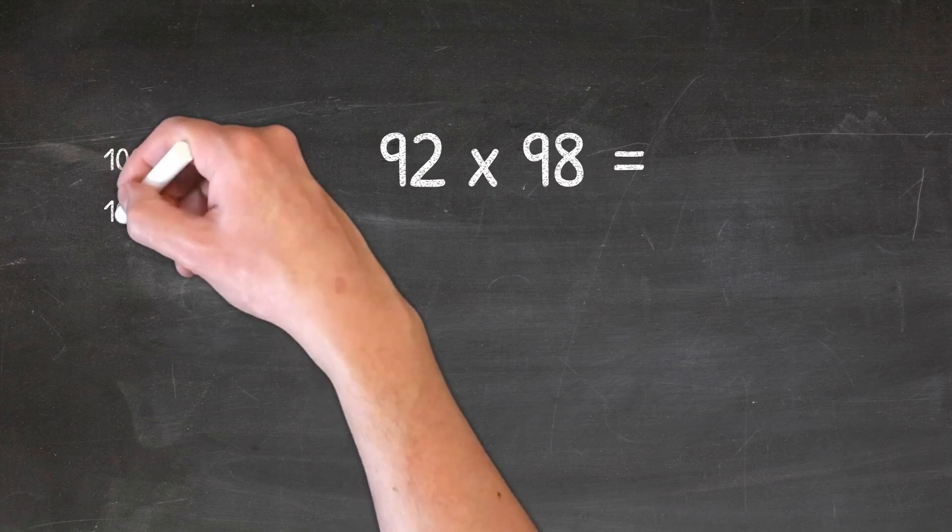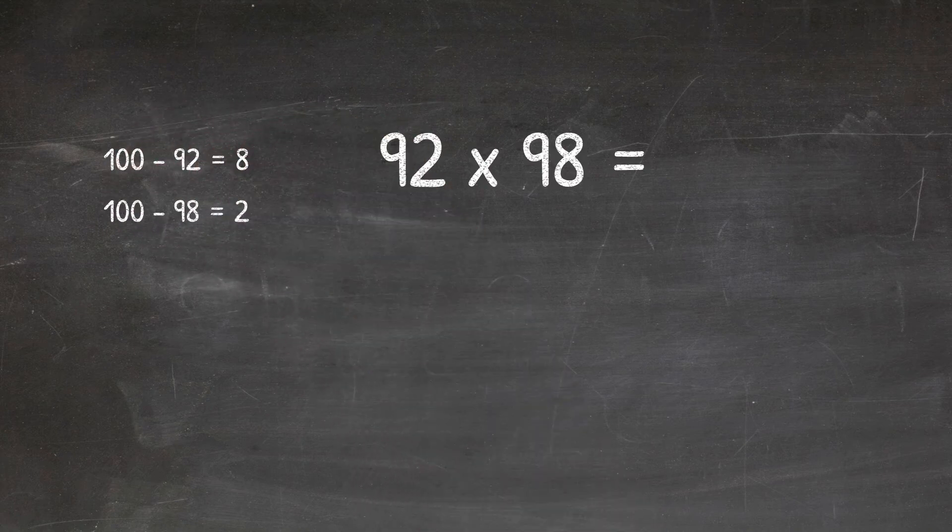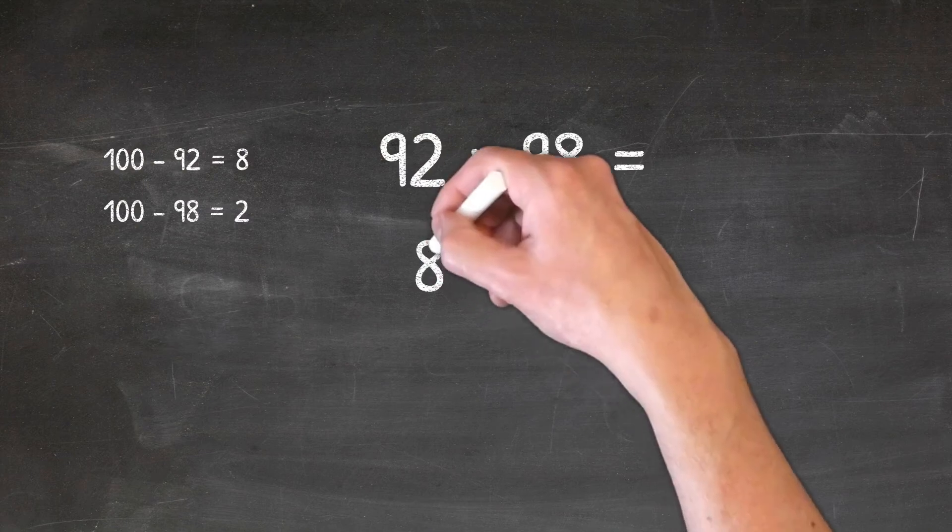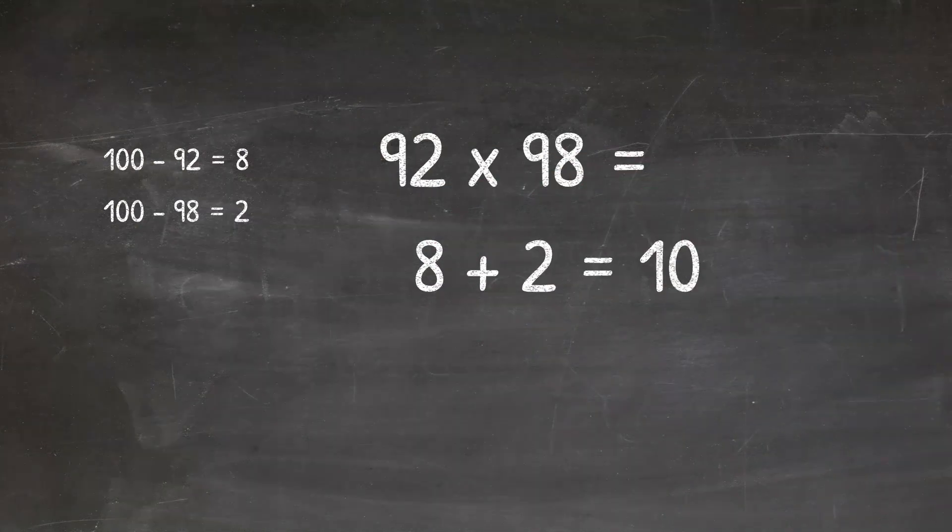Now we're going to take our second number, 98, and do the same thing. We're going to minus that from 100 and that gives us 2. Now we're going to take these two numbers, this 8 and the 2, and add them together. This gives us 10.